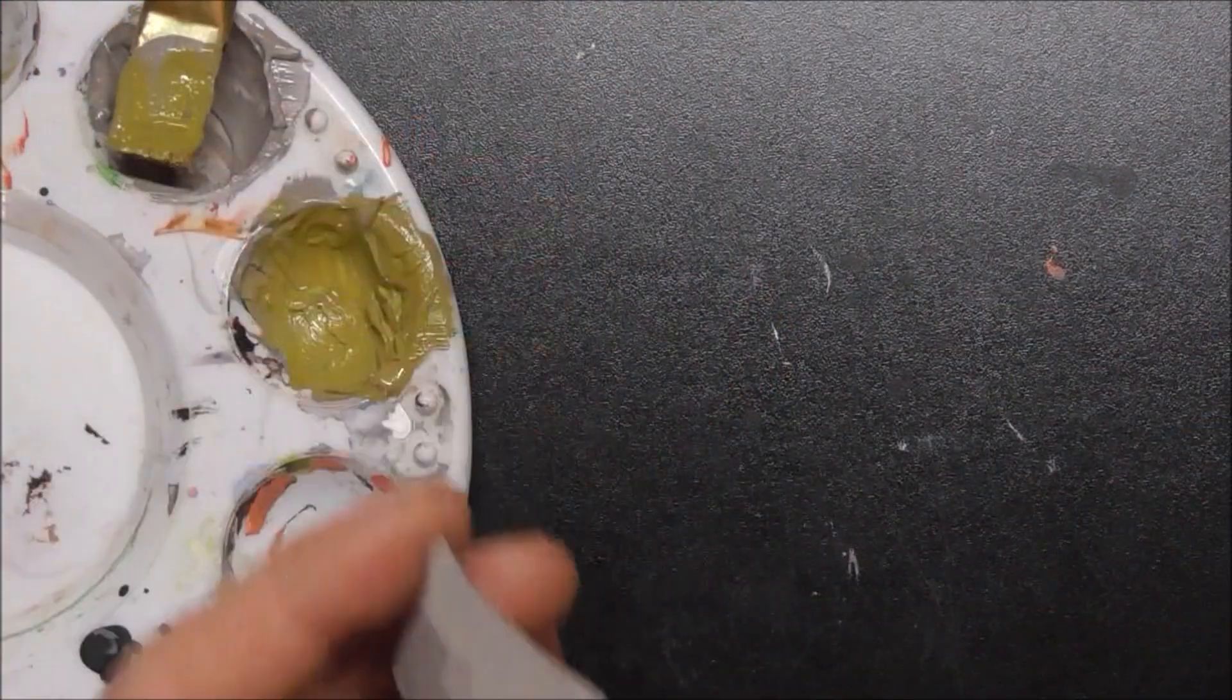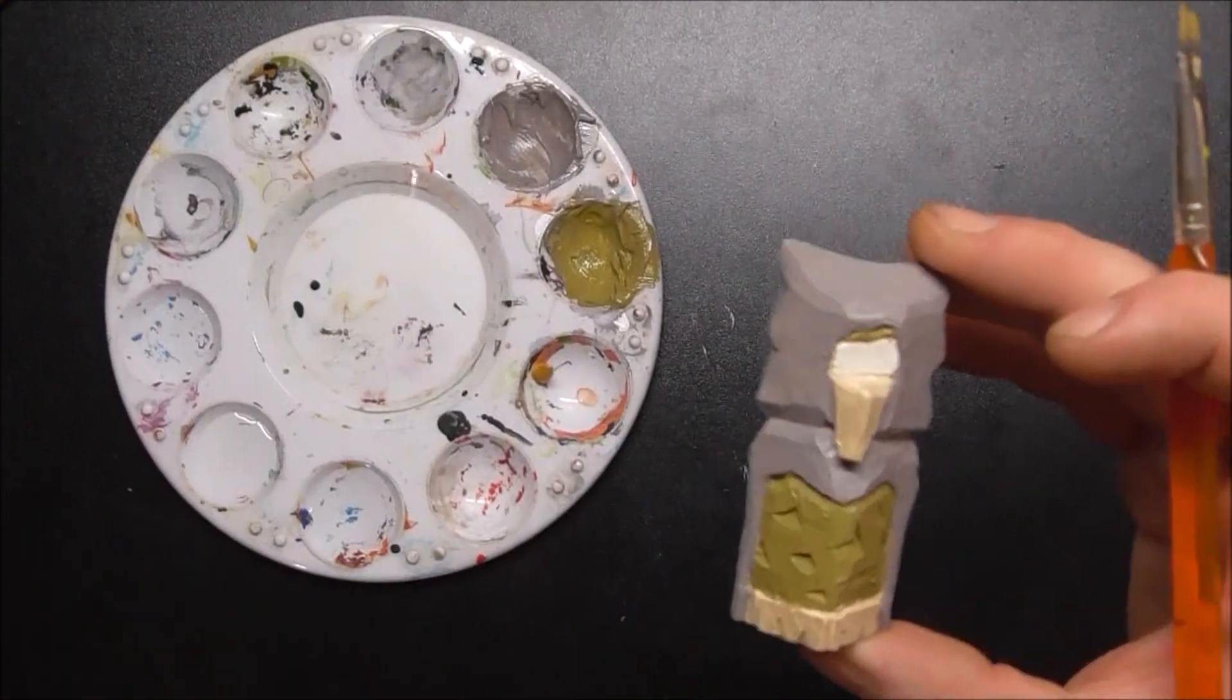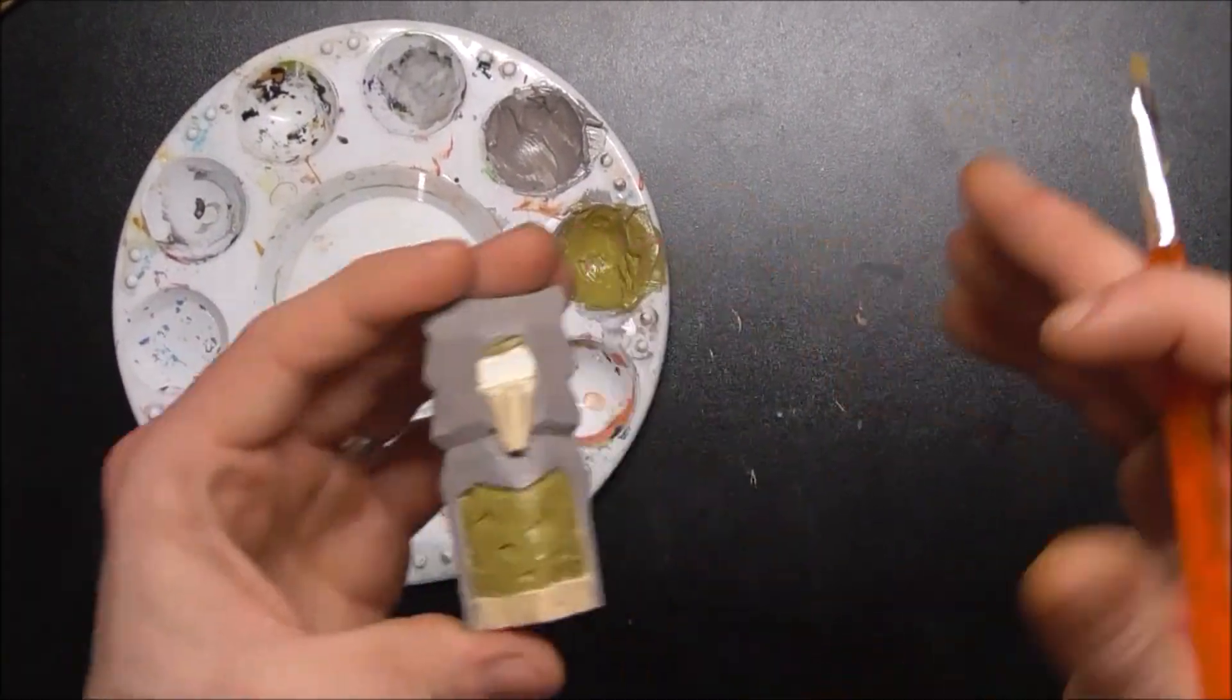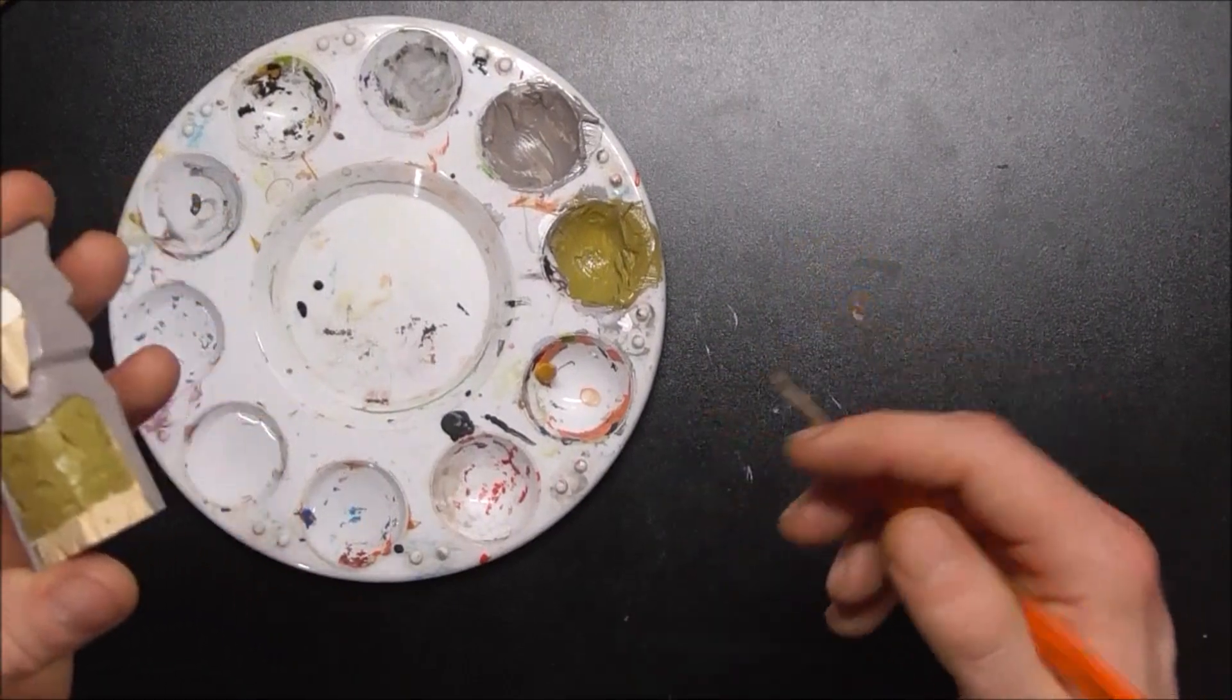Then we'll add in some of the blood type details and a little bit of black and the black wash at the end. For the beak and feet area, I'm just going to use this yellow. It's kind of a dollar yellow. I might throw in a little bit of black to darken it, but we'll see how it looks.